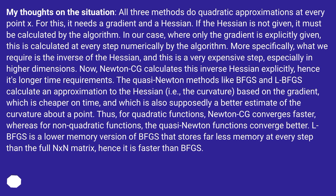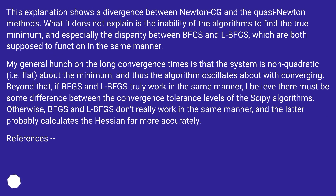LBFGS is a lower-memory version of BFGS that stores far less memory at every step than the full N×N matrix, hence it is faster than BFGS. However, this explanation shows a divergence between Newton-CG and the quasi-Newton methods, but does not explain the inability of the algorithms to find the true minimum, and especially the disparity between BFGS and LBFGS, which are both supposed to function in the same manner.